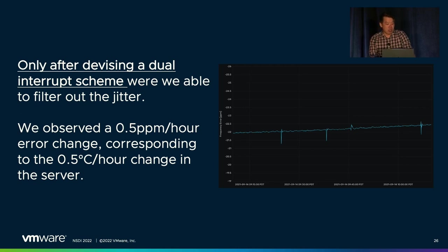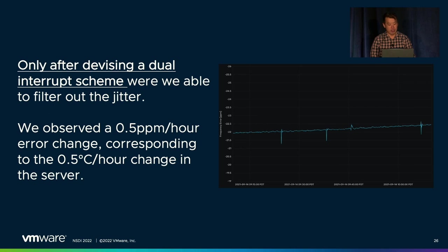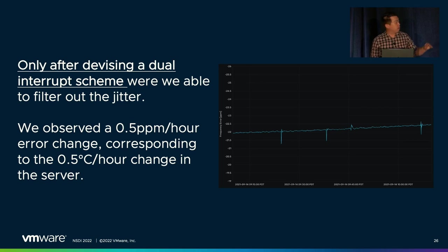With an accurate external clock finally attached, we were able to observe that the crystal actually behaved as the datasheet told us — we obtained a 0.5 ppm change per hour, which roughly corresponded to the temperature change we were seeing on the server over that period. One key thing to observe on this graph is that while the error is around negative 22 ppm, it's actually quite stable — this is the static error that we can filter out.